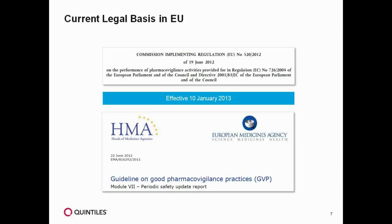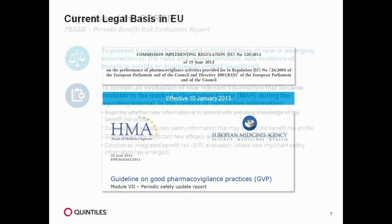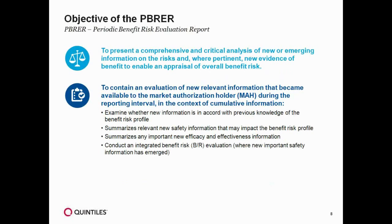The objective of the PEBER, also known as the Periodic Benefit-Risk Evaluation Report, was to present a comprehensive and critical analysis of new and emerging information on the risks and, where pertinent, new evidence of benefit to enable an appraisal of the overall benefit-risk. It should contain an evaluation of new relevant information that became available to the marketing authorization holder during the reporting interval in the context of cumulative information, examine whether new information is in accordance with previous knowledge of the benefit-risk profile, summarize relevant new safety information that may impact the benefit-risk profile, summarize any important new efficacy and effectiveness information, and conduct an integral benefit-risk evaluation where new important safety information has emerged.